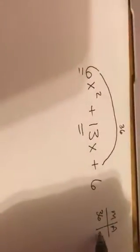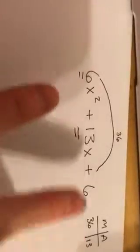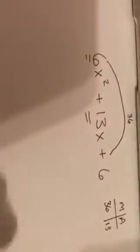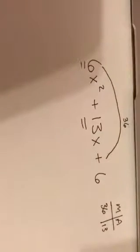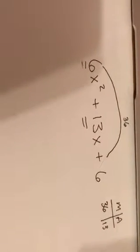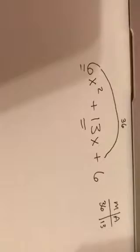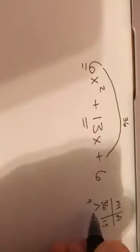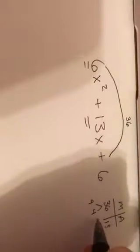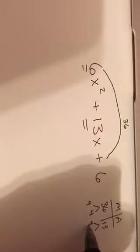So I'm gonna go ahead and put that right here. Now I need to find two numbers that multiply to 36 and add to 13. When I think about those two numbers, what instantly pops in my head is 9 and 4. So I'm gonna write those down. 9 and 4 multiply to give me 36, and 9 and 4 add to give me 13.